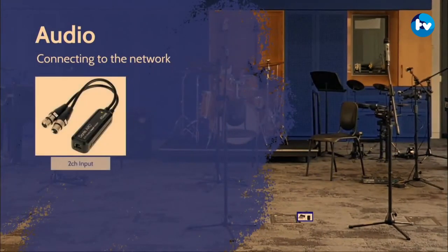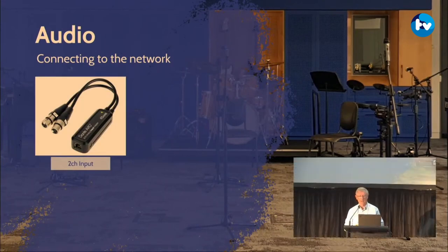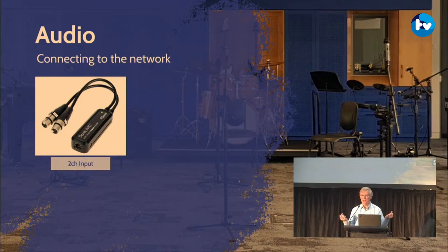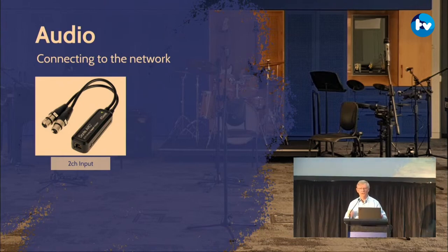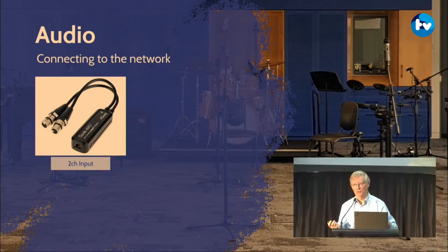Let's look at audio first. If you've got audio that you want to get into the network, you can have little things like a two-channel input adapter called an AVO — we're using a bunch of them here today. It's got a data socket on the end; it plugs into a data point with an ethernet cable, that cable powers it, and it sends digital audio by converting the audio from two XLR plugs. You could plug an ordinary mixer into that, or anything with XLR outputs, and that data will go onto the network to be picked up wherever you want it. It can carry 512 channels of audio in that cable — this only allows two.